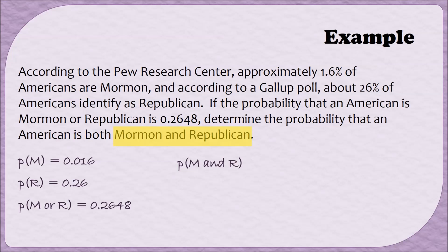The formula says that we can take the probability of M and add it to the probability of R, but then remember we need to subtract the probability of M or R. Since we made the summary on the left, we already have all the values we can plug in, so we'll just substitute. 0.016 for the probability of M, 0.26 for the probability of R, and 0.2648 for the probability of M or R. When we simplify, we end up getting a 0.0112.